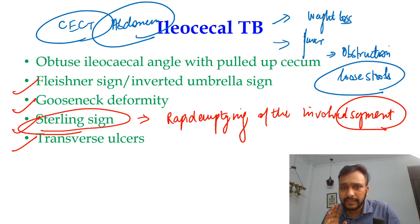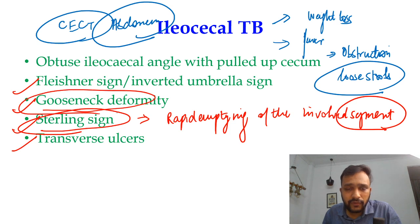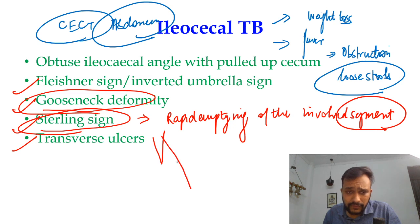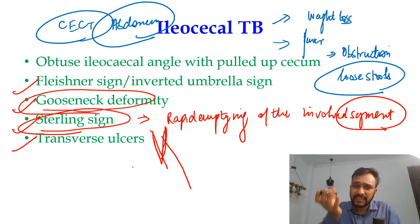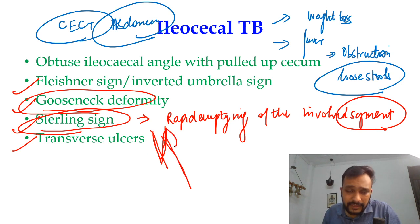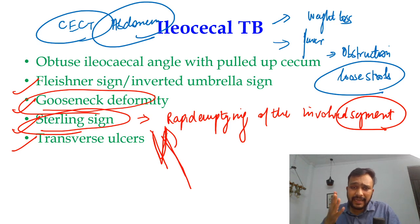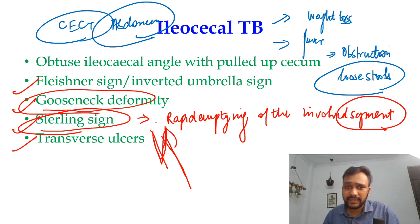Talking about the gooseneck deformity: there is widening of the ileocecal angle because your cecum is pulled up, and the angle between the terminal ileum and your cecum widens, giving the shape of a gooseneck. This is your gooseneck deformity.